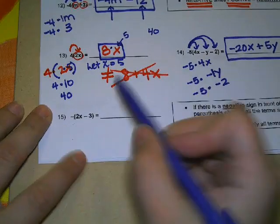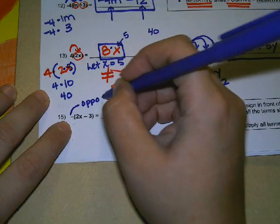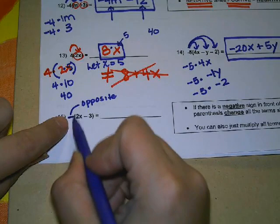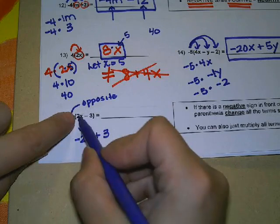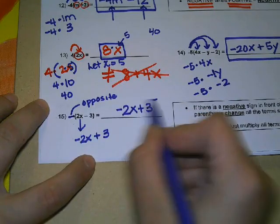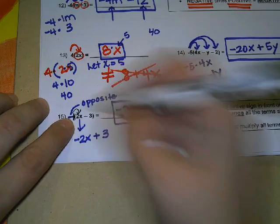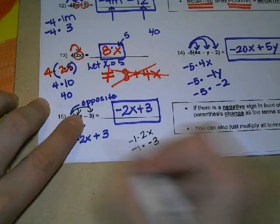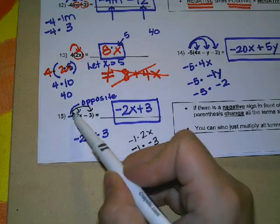In the next problem, we just have a negative symbol in front of the parenthesis. Remember, a negative means opposite — it means you don't have something. So I would read this as the opposite of 2x minus 3. When you just have a negative symbol in front of the parenthesis, 2x is going to become negative 2x, and instead of a minus 3 it's going to become positive 3. It just changes the signs inside the parenthesis. So the answer is negative 2x plus 3. Another way is to put a negative 1 out here, then distribute: negative 1 times 2x is negative 2x, and negative 1 times negative 3 is positive 3.